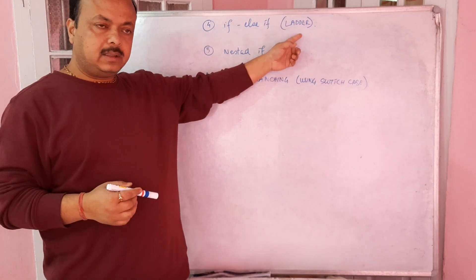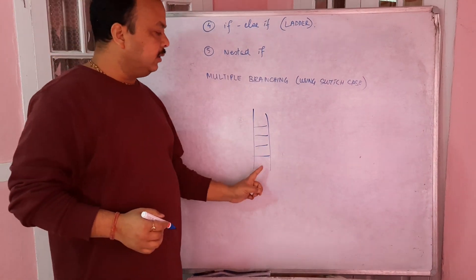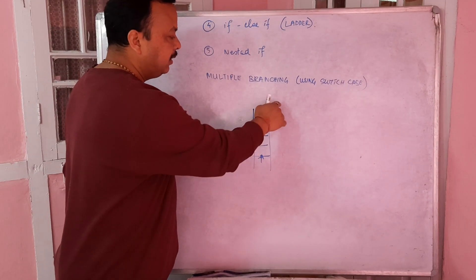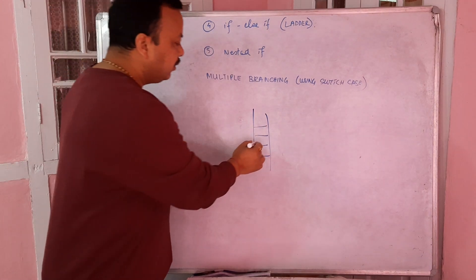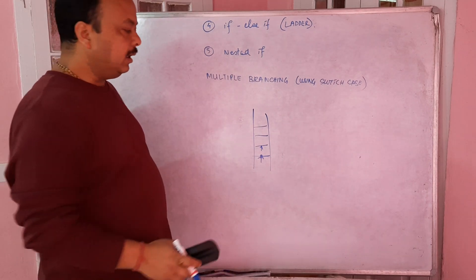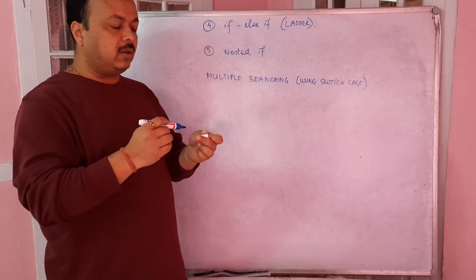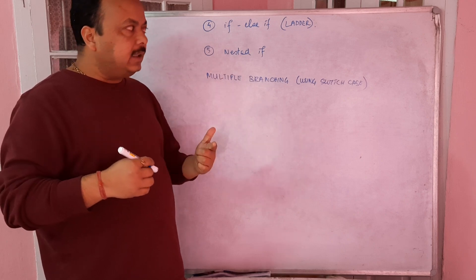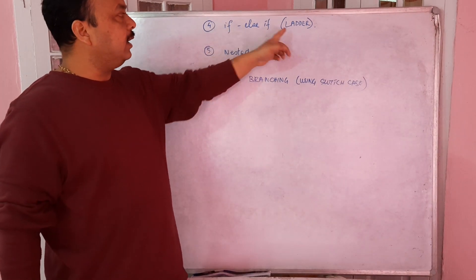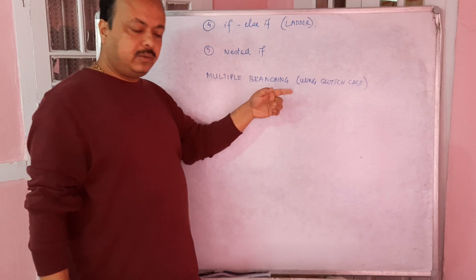What we're going to discuss is: firstly, the if-else-if ladder. The ladder analogy means you climb one step, check whether you've reached a certain place, and if not, you climb one more step. This is the purpose of the ladder approach. Everything depends on the situation and the problem. The last topic is nested if, and after that we'll do multiple branching using switch case.